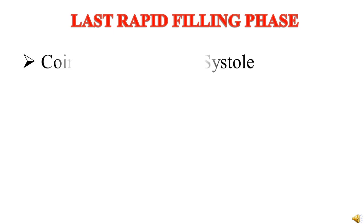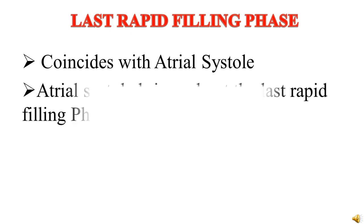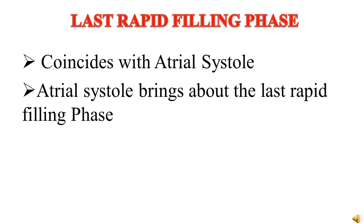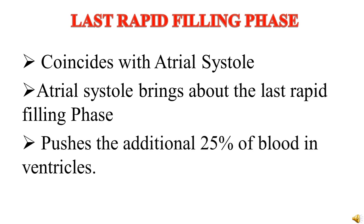The last phase is the last rapid filling phase, which coincides with the atrial systole. The atrial systole brings about this last rapid filling phase, pushing the additional 25% of blood into the ventricles. With this phase, the ventricular cycle is completed, and the cycle repeats — the atrial systole causes further phases, thus completing the whole cardiac cycle.